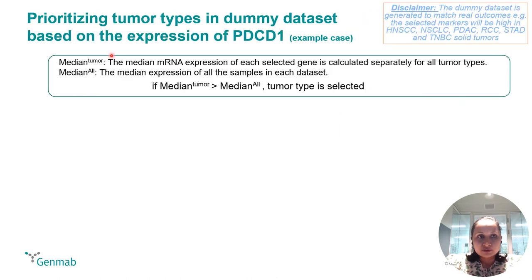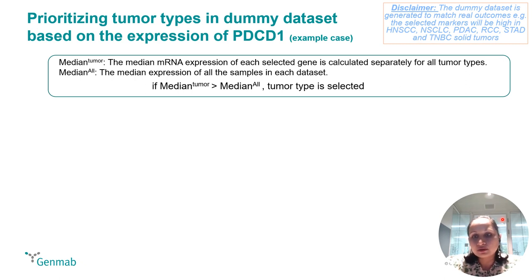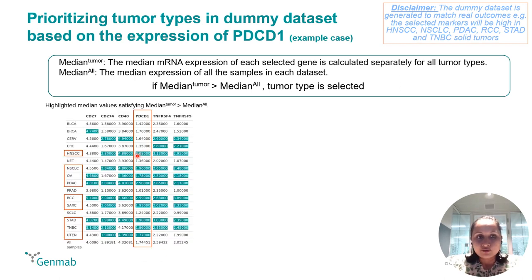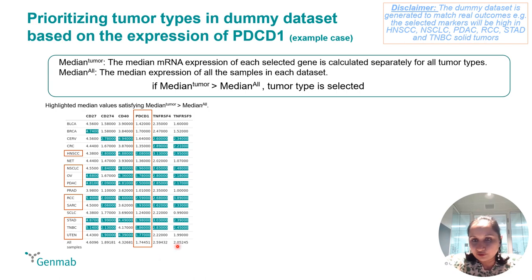To showcase the first functionality of VIBE, I'm going to show you how we are prioritizing tumor types based on expression of PDCD1. We generally use median expression of genes; one can also use mean or 75th percentile quantile as thresholds. So we have median tumor for individual tumor types and median of all the samples in each dataset. If the median of tumor is higher than the median of all — that is our threshold — then a tumor type is selected, and it can be visualized in different forms. First is the table, where we highlight the cell — that is the tumor type for the gene — if it's above the threshold.